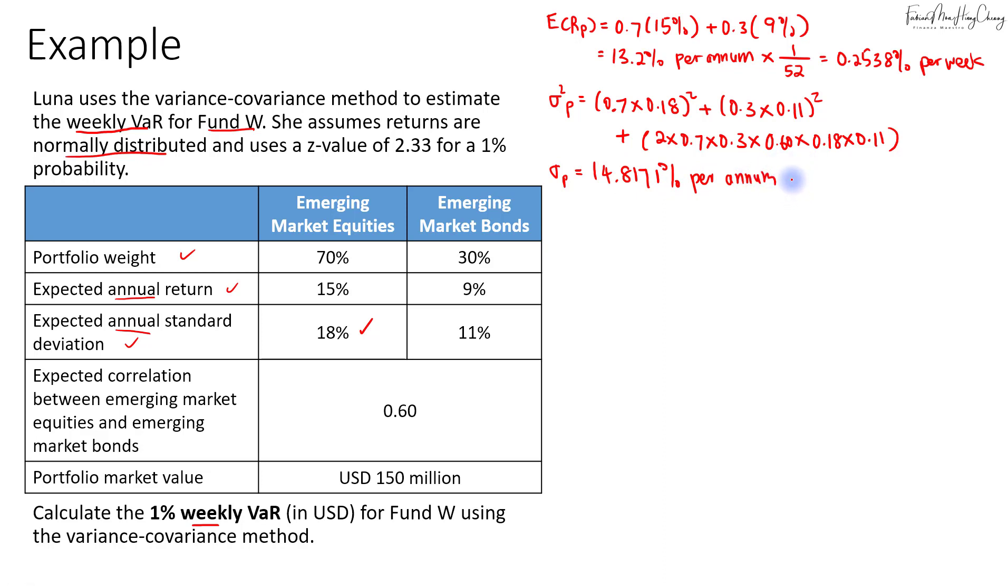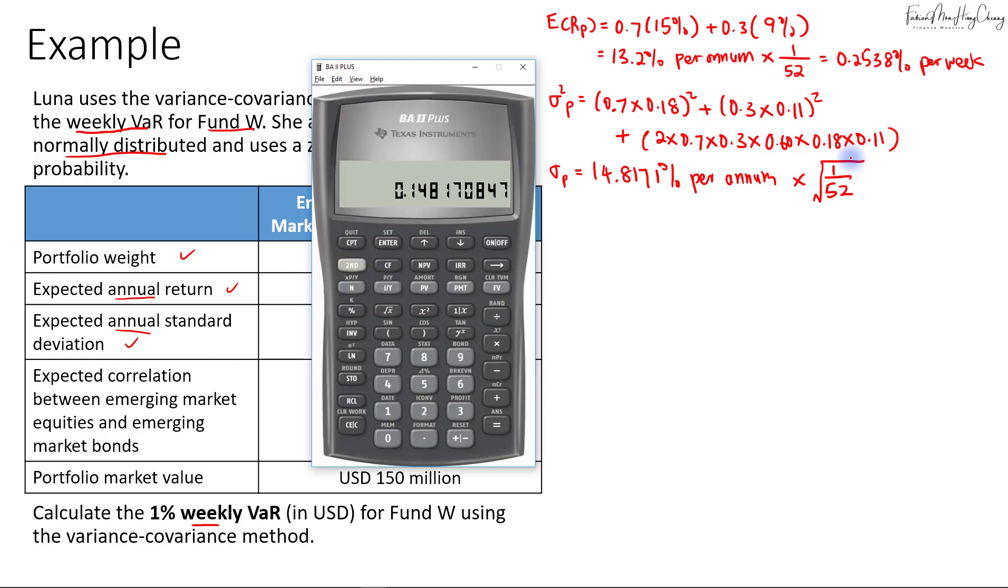When you scale standard deviation, remember we have to scale it by the square root of time. In this case, multiply by 1 over square root of 52 weeks. This gives us 0.0205, or in percentage terms, 2.0548% per week.